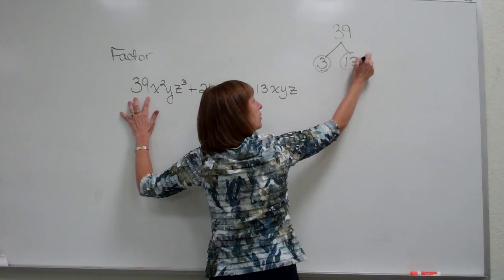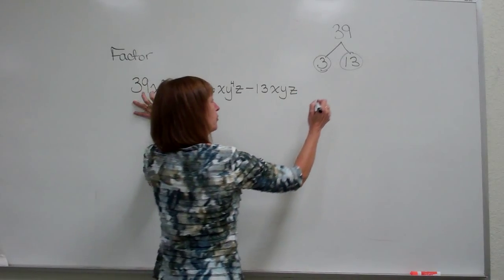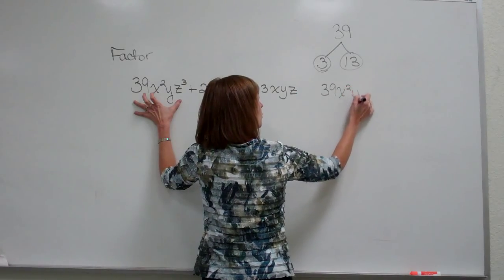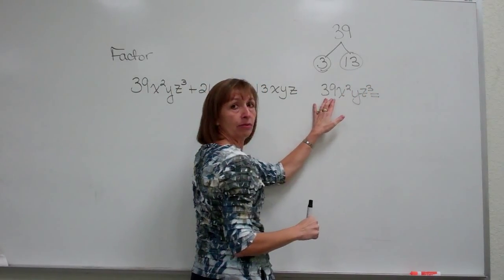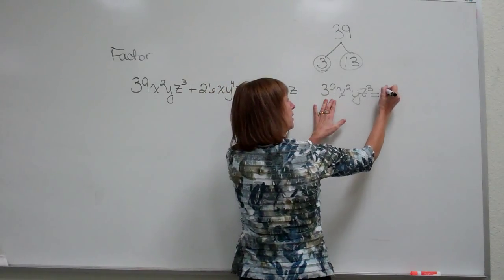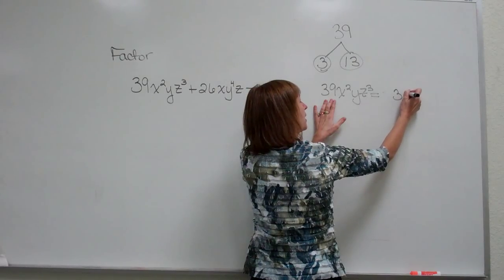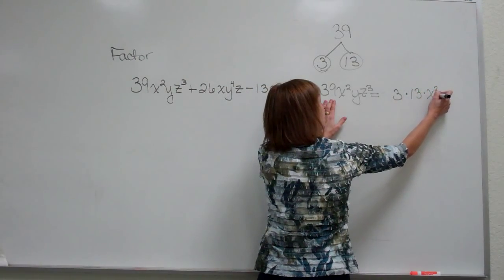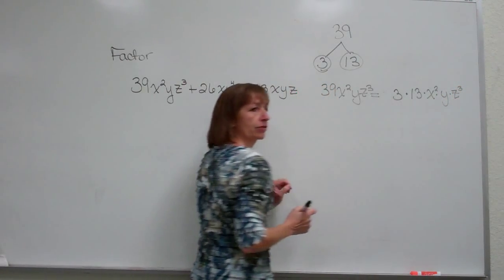So now we're going to write our term, our first term, 39x²yz³ as 3 times 13 times x² times y times z³. Just writing on the factors of the first term.